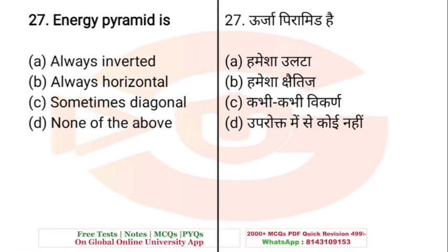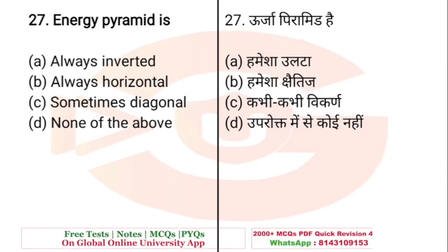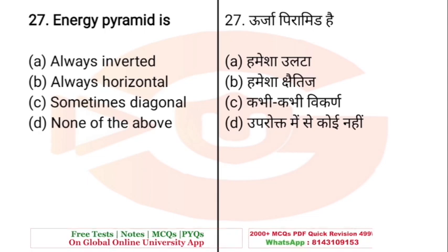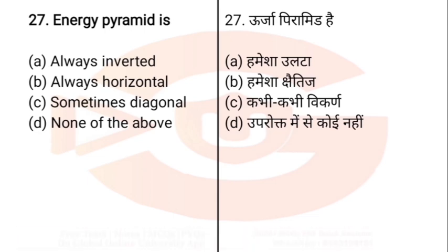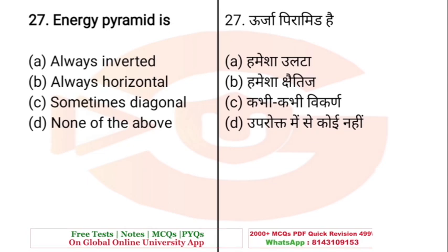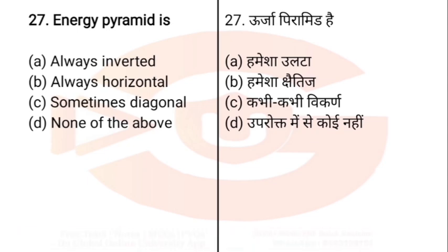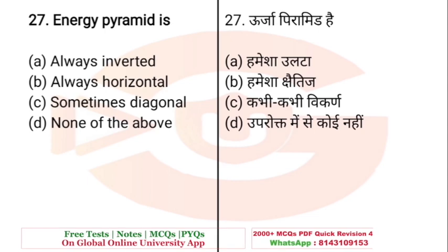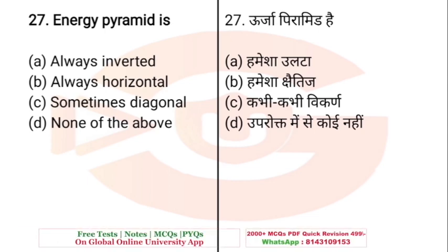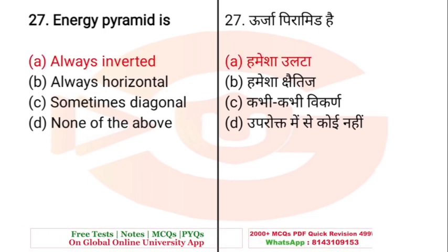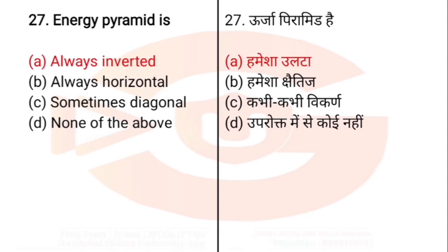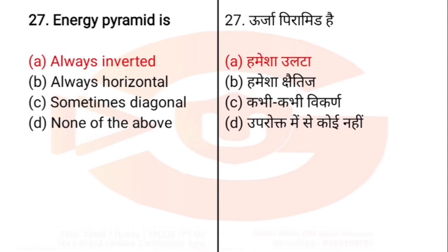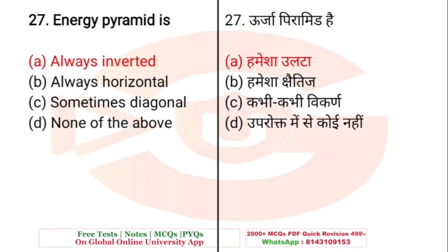Question: An energy pyramid is — A. Always inverted, B. Always horizontal, C. Sometimes diagonal, D. None of the above. The right answer is A — always inverted. What is always upside-down is called an energy pyramid.